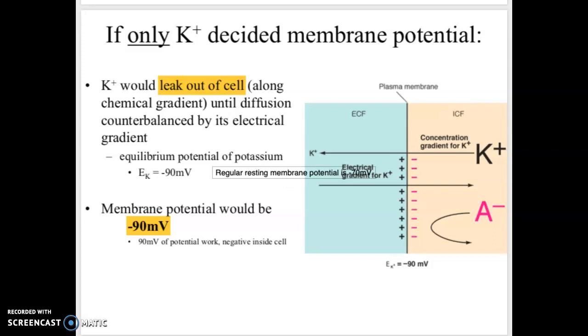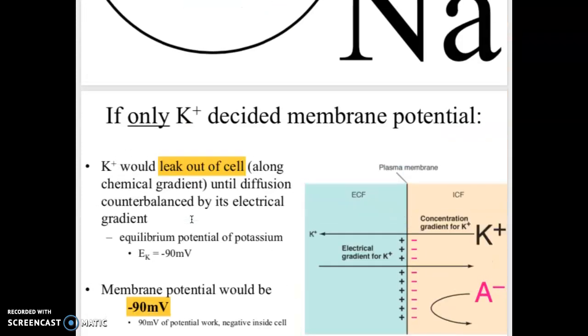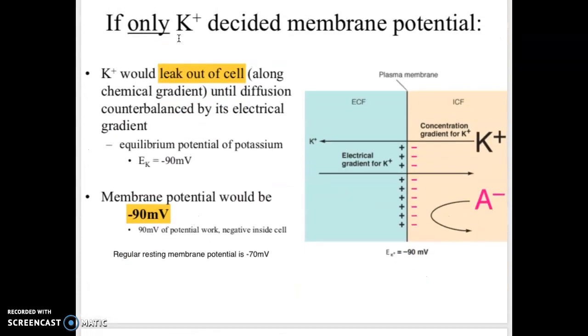The regular resting membrane potential is negative 70, so you can see this is quite a bit lower than what the regular resting membrane potential would be. If only sodium was in charge, sodium would leak into the cell until it's balanced by its electrical gradient, and the membrane potential would be plus 60 millivolts. Again, normal is negative 70. So here we think, which one is causing more influence on the actual resting membrane potential? Which one is closer to negative 70? And we would definitely say potassium.